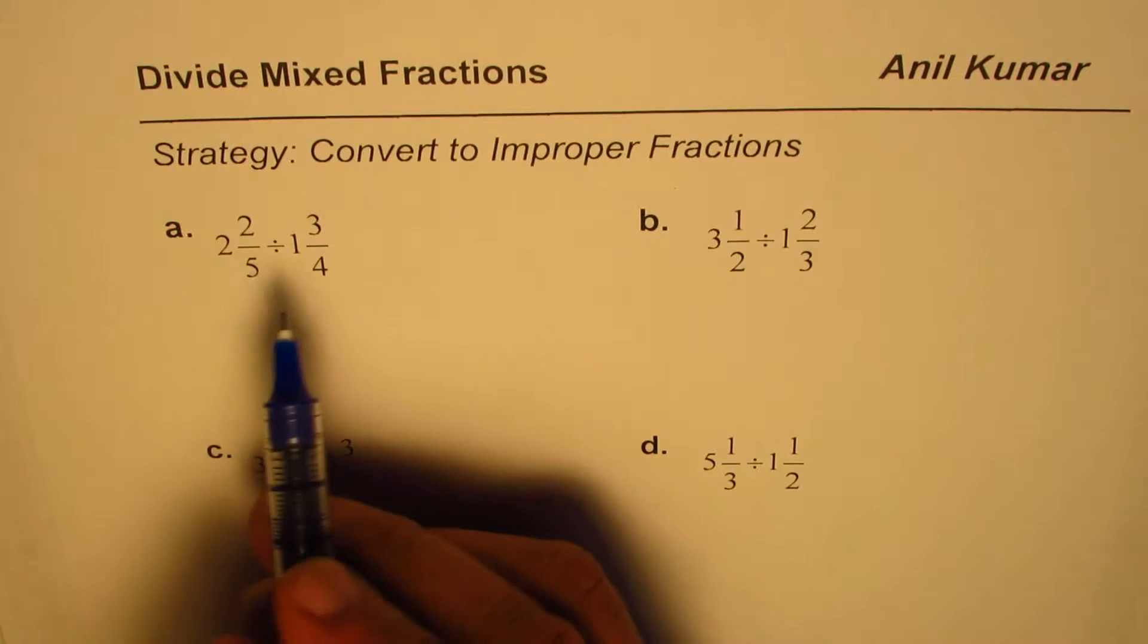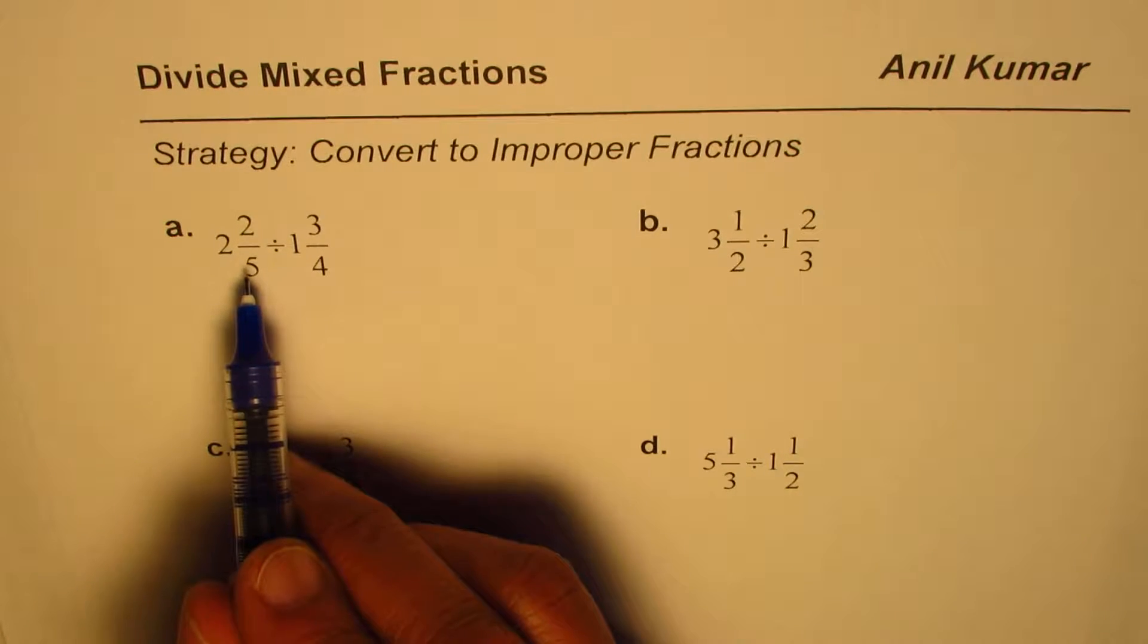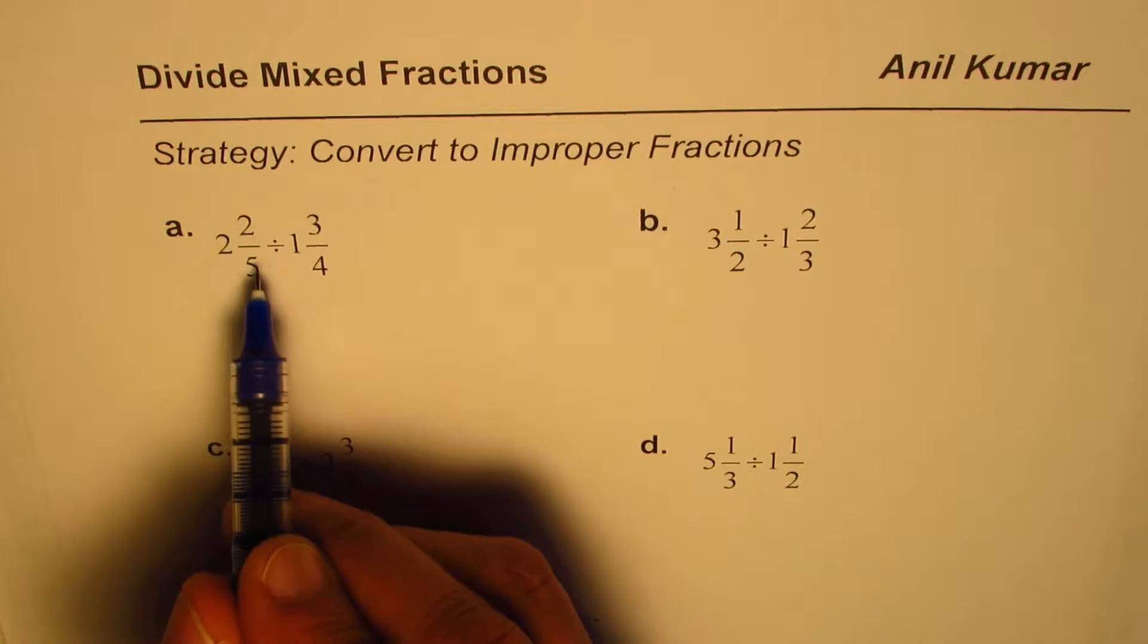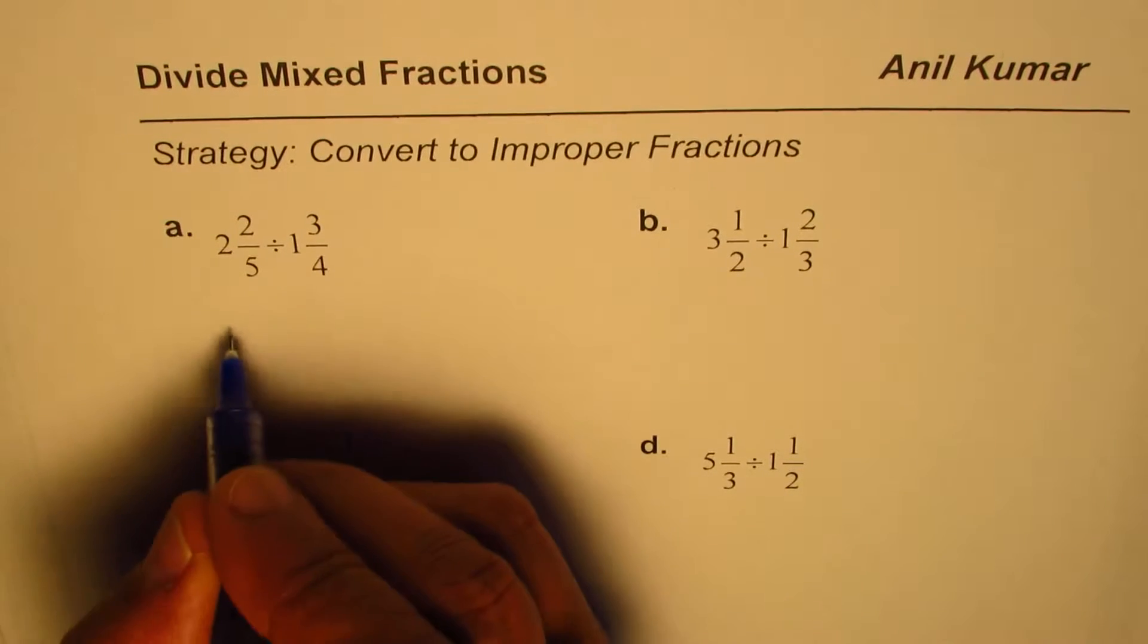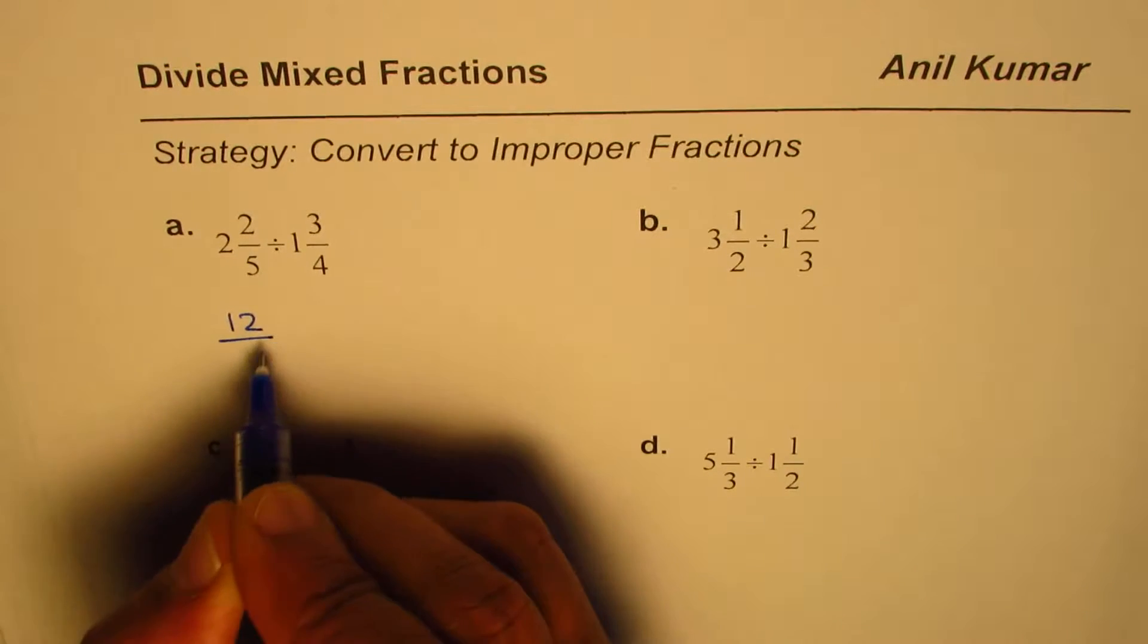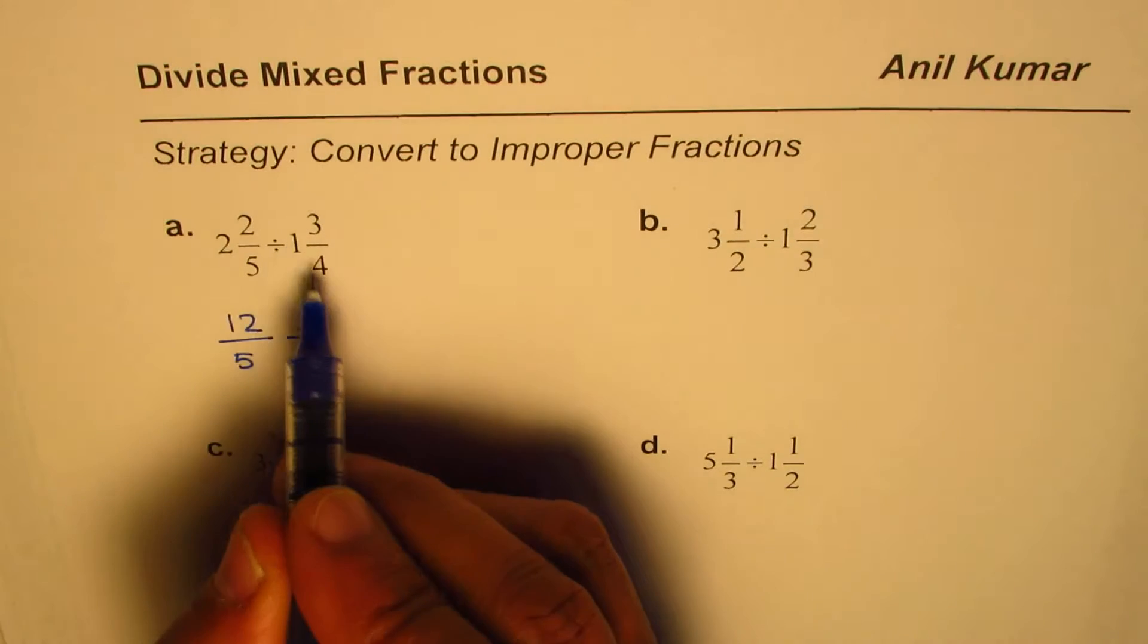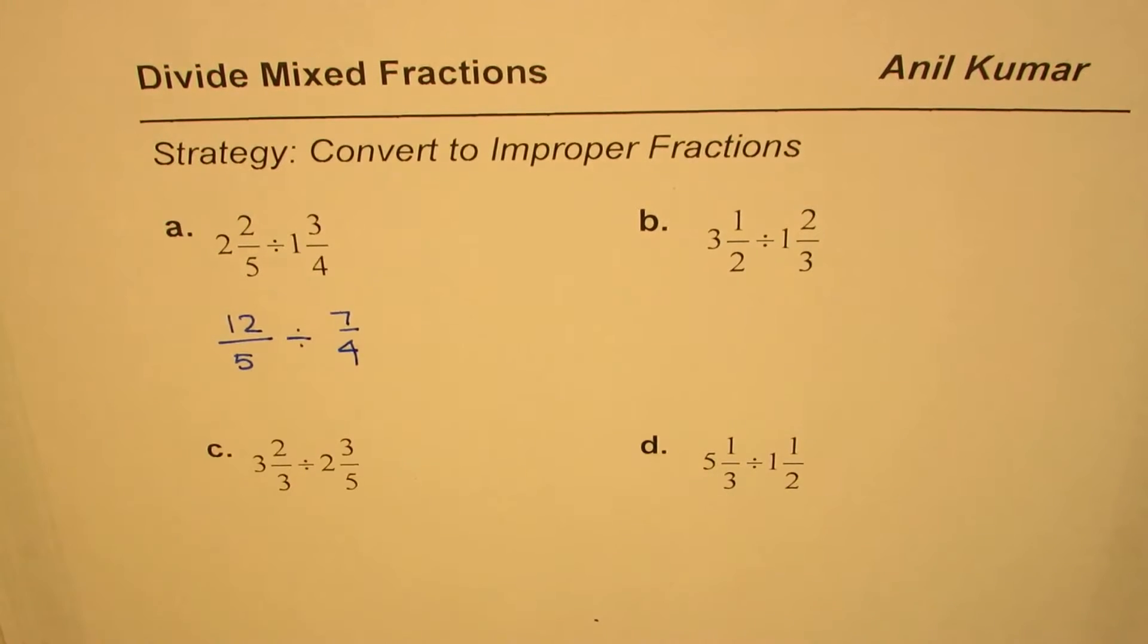The first step in such questions is to write the mixed numbers in the form of improper fractions. So 2 and 2/5: we multiply 2 by 5 to get 10, plus 2 is 12, so it's written as 12/5 divided by—1 times 4 is 4, plus 3 is 7—7/4. That is the first step.